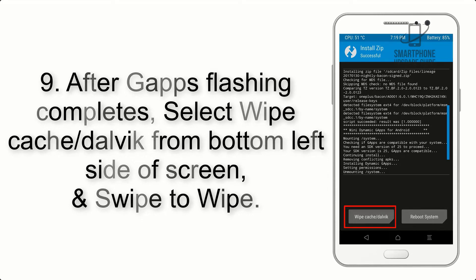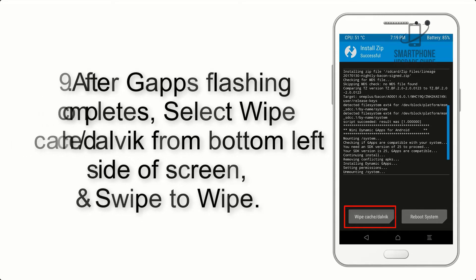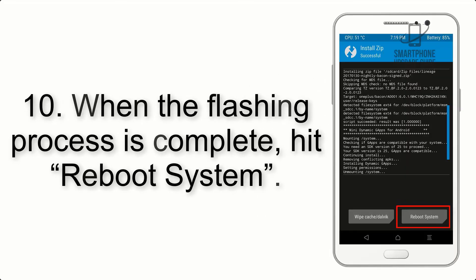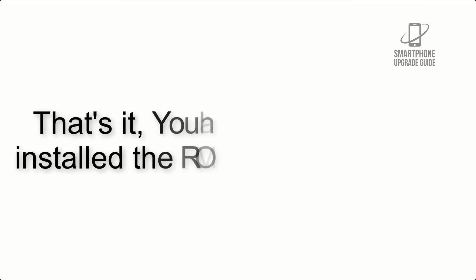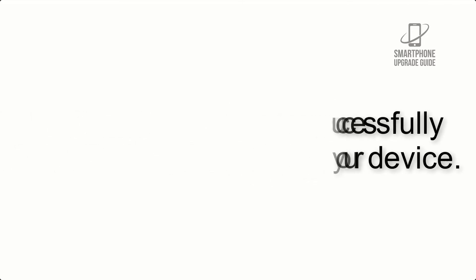Step 9: After G apps flashing completes, select Wipe Cache and Dalvik from the bottom left side of the screen and swipe to wipe. Step 10: When the flashing process is complete, hit Reboot System. That's it — you have successfully installed the ROM on your device.